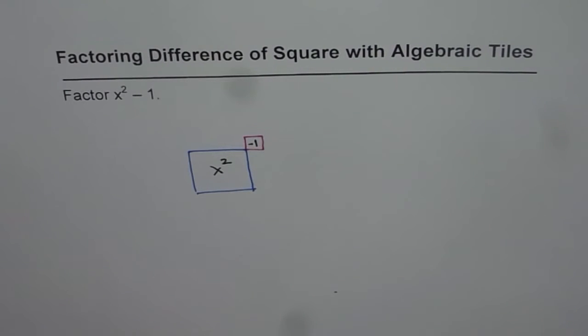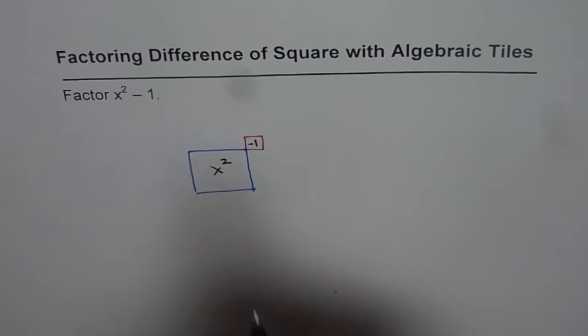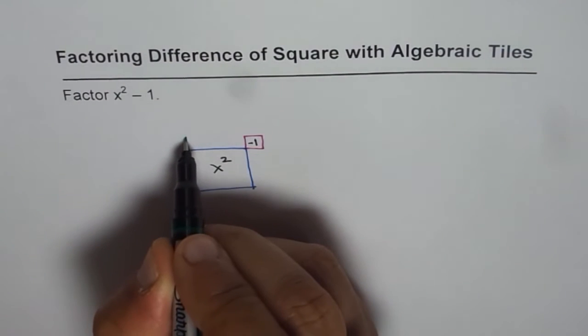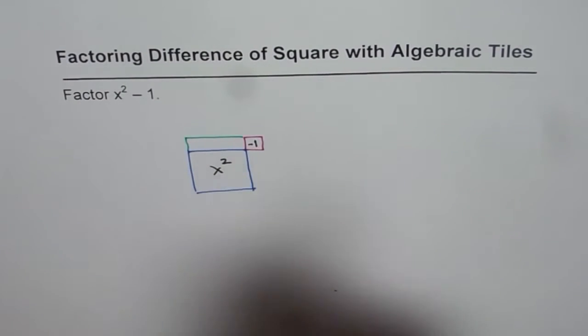What I can do is to form square, I can add 1x positive and 1x negative. Now adding plus and minus x is kind of 0. So we are adding plus and minus x.